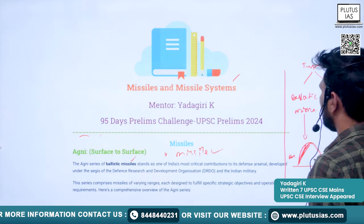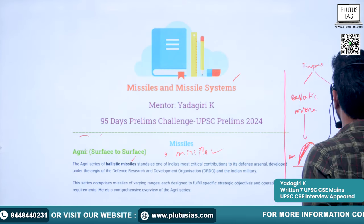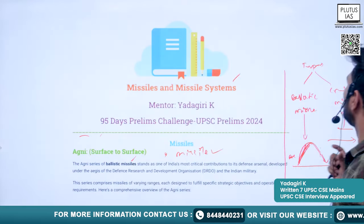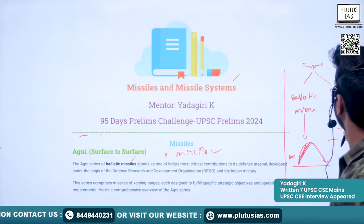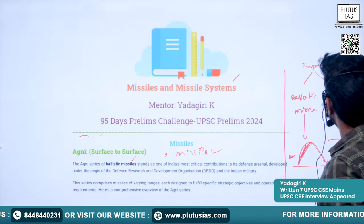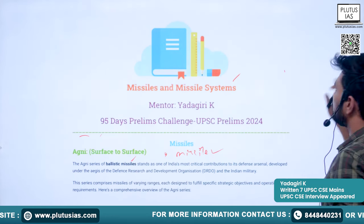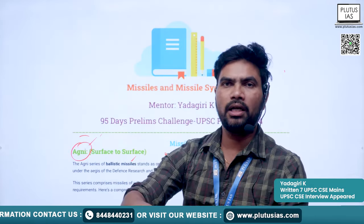In cruise missiles, there is no parabolic trajectory. The missile travels almost horizontally to the surface of the earth. This is the major difference between ballistic missiles and cruise missiles. Agni is a ballistic missile — it uses gravitational force when it re-enters the atmosphere of the earth.